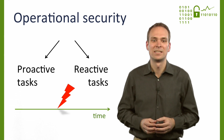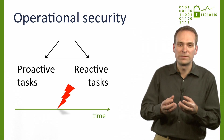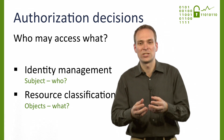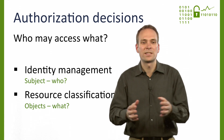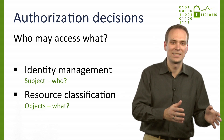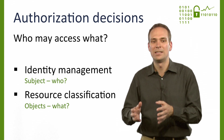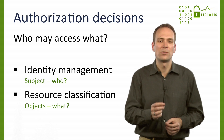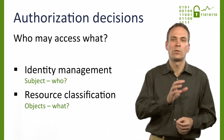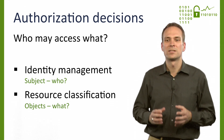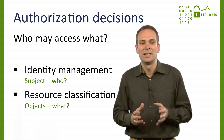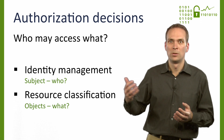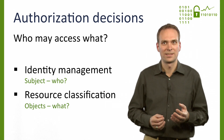Let's start with the proactive tasks. The core of information security is to make and enforce authorization decisions with regard to a set of protection goals such as confidentiality, integrity, availability, and some special variants thereof. It all boils down to the question: who may access what resource? To systematically make these decisions and eventually automate many of them, we first need to define subjects — who — and resources — what.